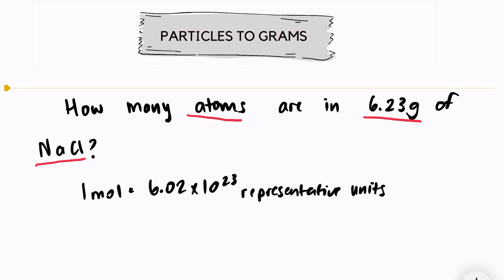Which means that if I were looking at a compound like NaCl, my unit would be particles because NaCl is not just made of one atom. But this question is asking me specifically how many atoms there are in this sample of 6.23 grams of NaCl.